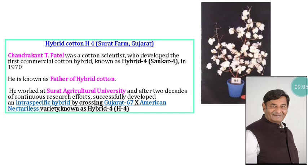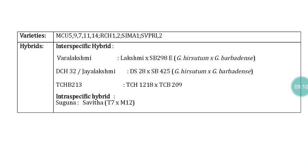For the development of H4, he used Gujarat 67 as the female parent and American Nectariless as the male parent — it is an intraspecific hybrid. Cotton has both varieties and hybrids; among hybrids there are inter-specific and intraspecific types. Examples of interspecific hybrids are Varalaxmi — a cross between hirsutum and barbadense — TCH 32 (also known as JLS), and TCHP 213, also crosses between hirsutum and barbadense. Savita is an example of an intraspecific hybrid.